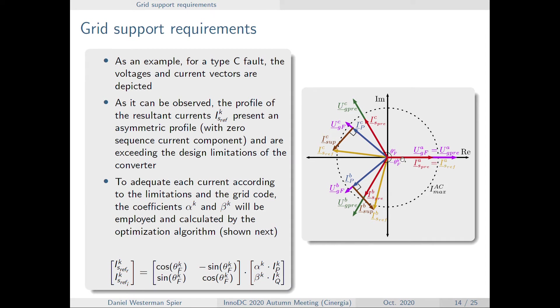But, let's say this figure here, we have a fault here, and we are applying these voltage supports in brown. And as we can see, the resulted reference currents for phase B and C are already exceeding the converter limitations, already exceeding what we can inject in the AC side.